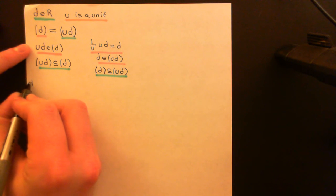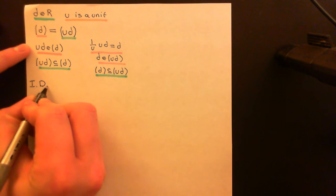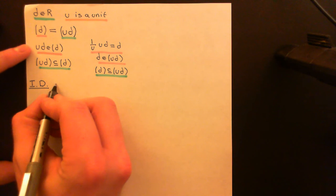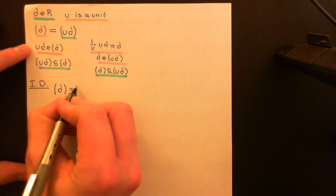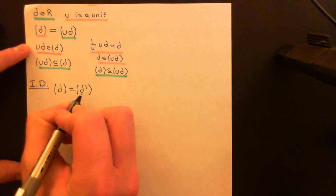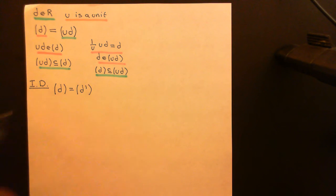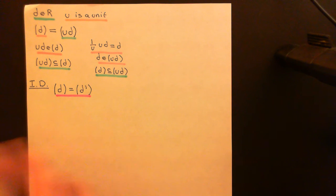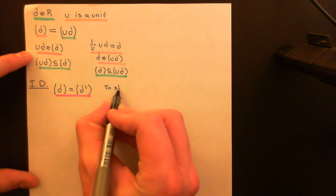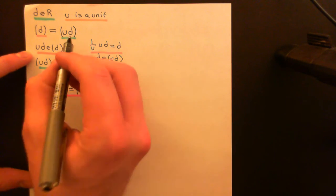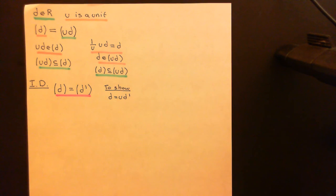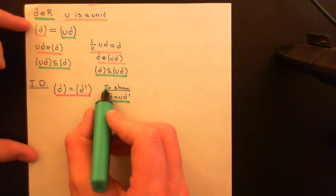So now we need to upgrade from just a commutative ring to an integral domain. I want to prove the other direction: if I have two elements D and D' which have the same principal ideal — that is, the principal ideal generated by D equals the principal ideal generated by D' — then I want to show that one is a unit multiple of the other. Specifically, to show there exists a unit element U such that D equals U times D'. They are related to one another by a unit.